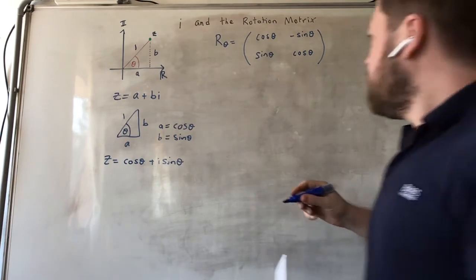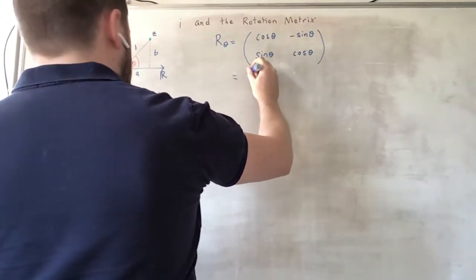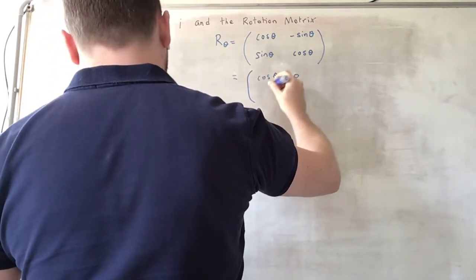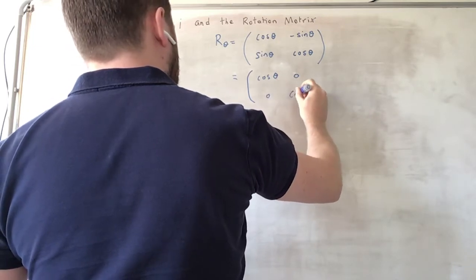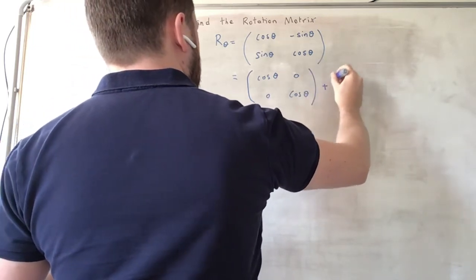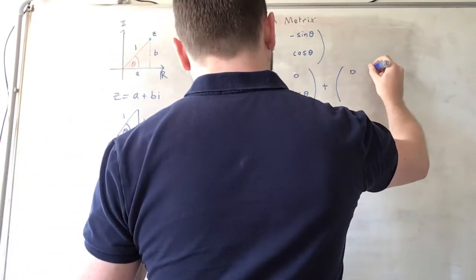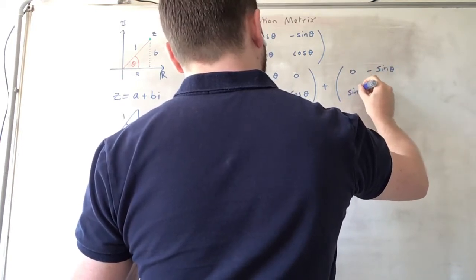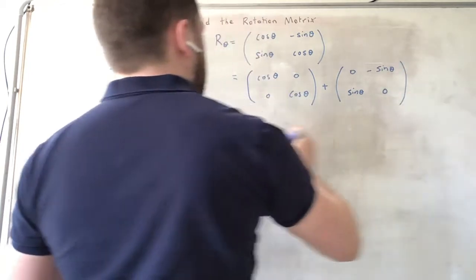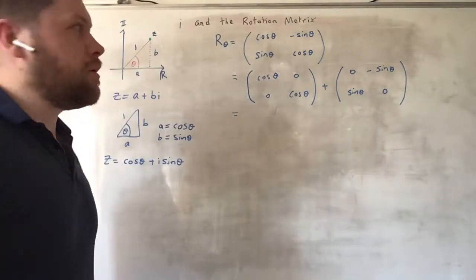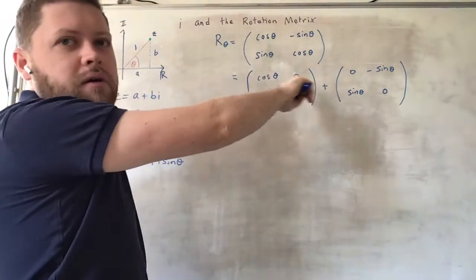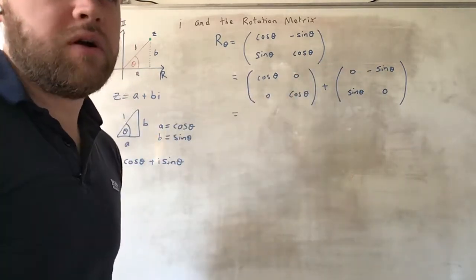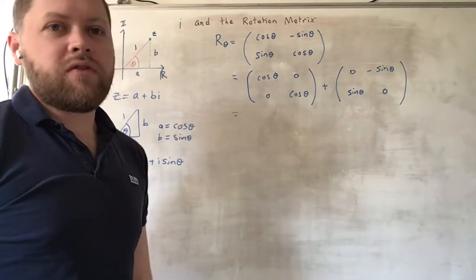Well I can rewrite this matrix now as follows. So I've just decomposed this into two matrices that when you add them together using the rules of addition of matrices, you get back the original. So these are two equivalent statements.